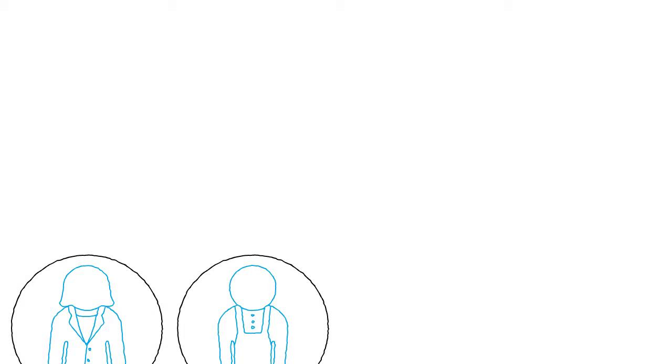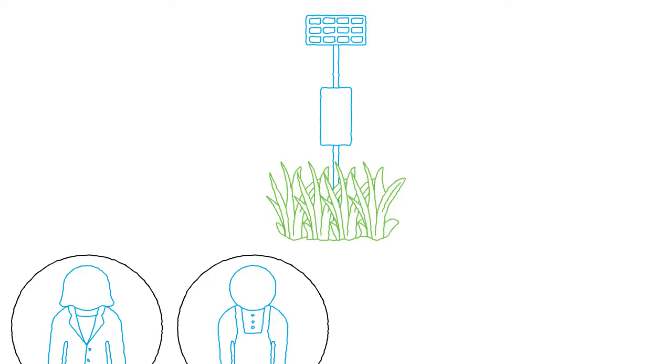Titus, a farmer, installs moisture sensors in his fields. If soil moisture drops below a predetermined threshold, the sensors trigger the farm's irrigation system, which provides just enough water to restore optimal moisture to the soil.